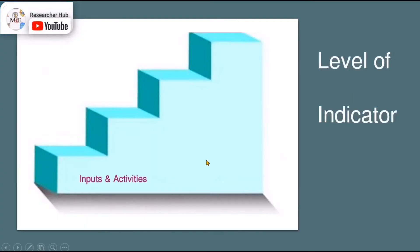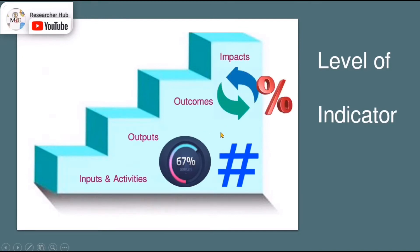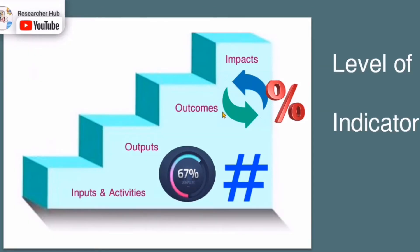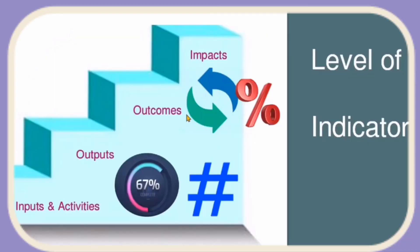In conclusion, there are two levels of indicators. The first level demonstrates the progress of the project, which is more focused on number — very often it starts with number. Another level of indicators is used to measure the changes, which very often starts with percentage. So the first is for demonstrating the progress, and the second level is for measuring changes. Thanks for watching this video — I hope you liked it, and if you have any questions, feel free to drop your comments in the comments box below.